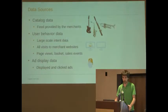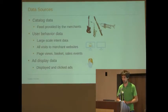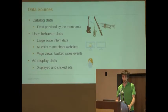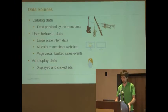The sources of data that we use in order to compute that: first, catalog data — very standard data given by retailers. For each item you get an image, a name, description, price, categories. You also get user behavior data — basically the web history of the users, all anonymized, on the merchant website: page views, basket, sales events, all the listing pages. All that is sent to us in real time.